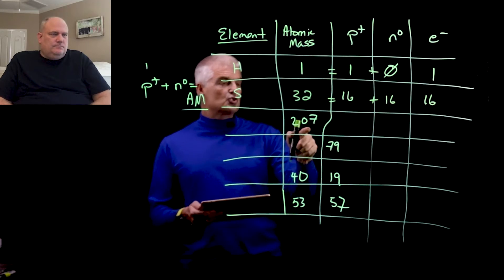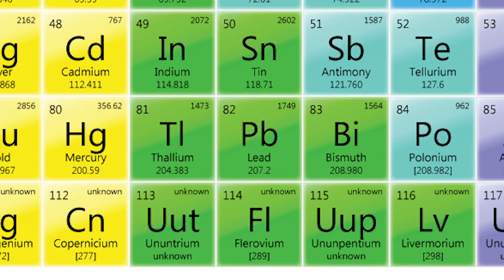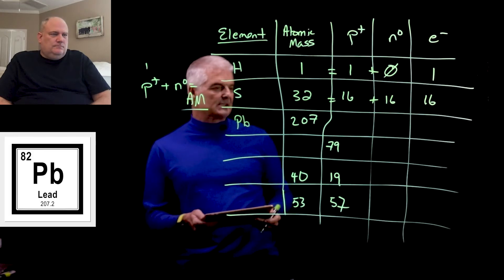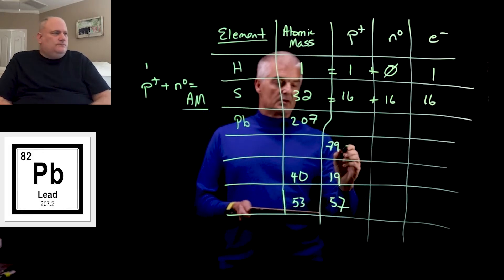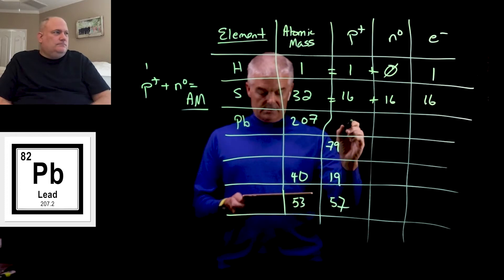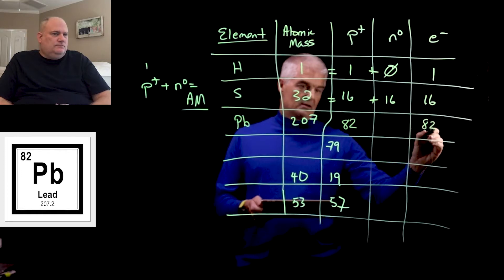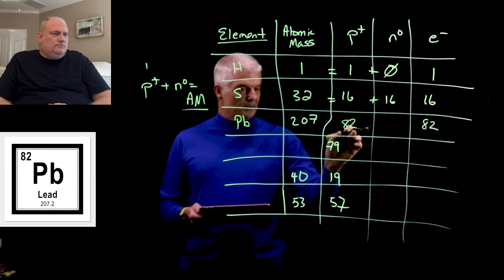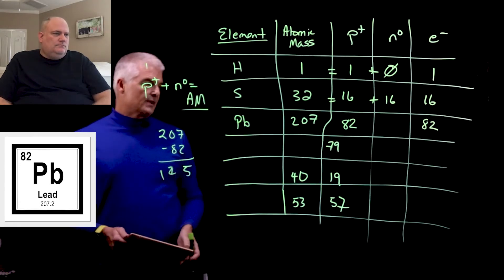Now let's find the element with an atomic mass of 207. Looking through the periodic table, you'll find just one substance with that mass — the element Pb, which is lead. Lead has an atomic number of 82, so protons = 82 and electrons = 82. For neutrons: 207 minus 82 equals 125.